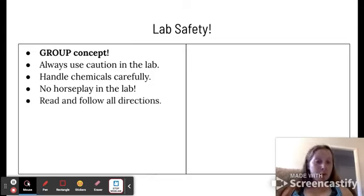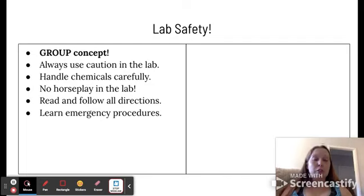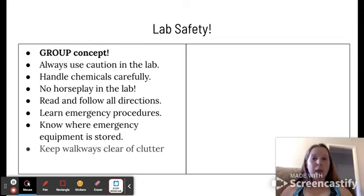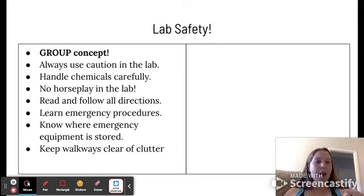Make sure you read and follow all directions. Learn your emergency procedures, which we will go over together in class. And know where all of your emergency equipment is stored, where the fire extinguishers are, where the fire blanket is, safety showers, things like that. Just make sure you know where all of that is located. And then make sure to keep your walkways in the lab clear of clutter. So like no book bags, cords, things like that. Just make sure it's easy to get in and out of the lab.